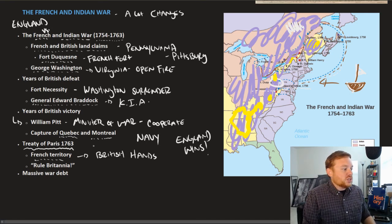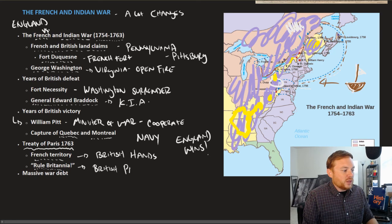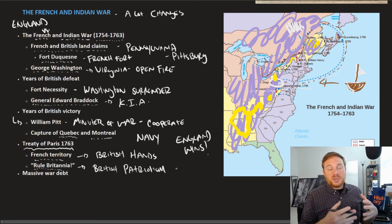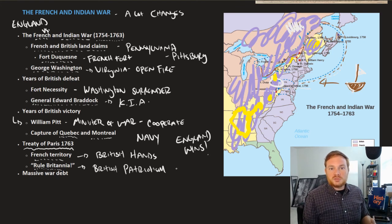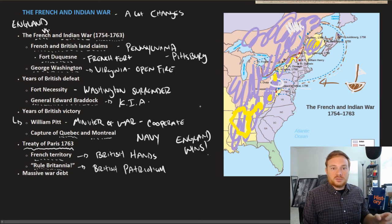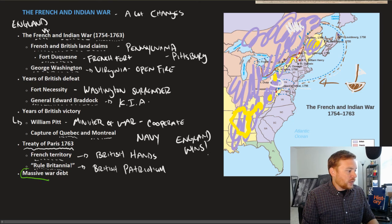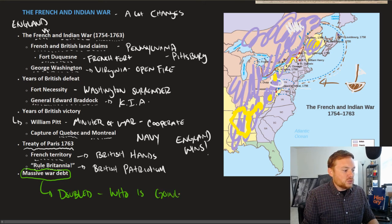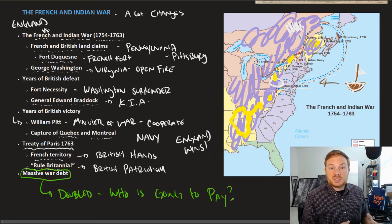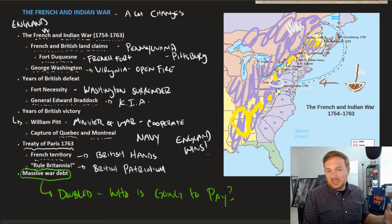The British celebrated with a spirit of Rule Britannia — a sense of British patriotism that was very powerful not just in Great Britain, but also among the colonists, because this was a colonial victory too. However, hidden in the details of this conflict lies a huge problem that eventually leads to the American Revolution: massive war debt. Even though Great Britain won, the national debt doubled. The question the British were asking was: who is going to pay this war debt? Wars are expensive, and even though they won, they owed a lot of money.